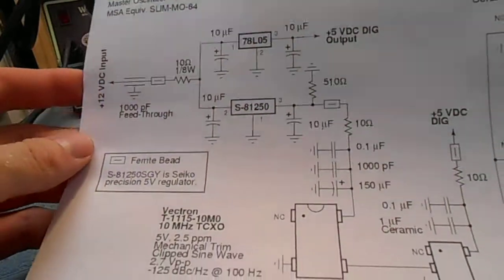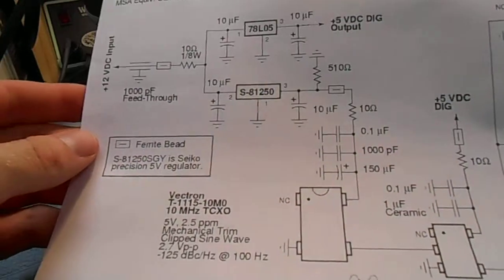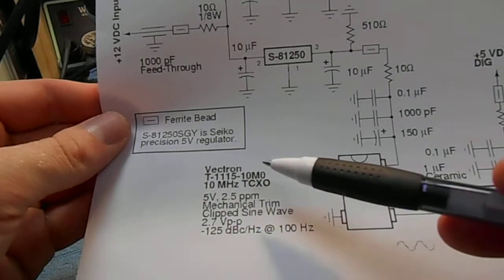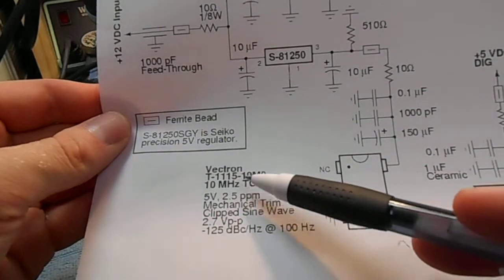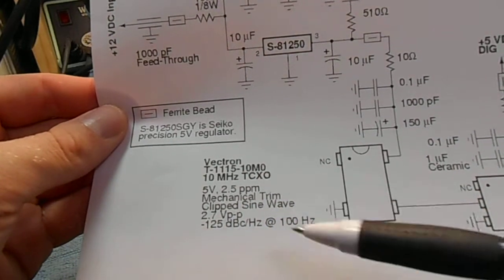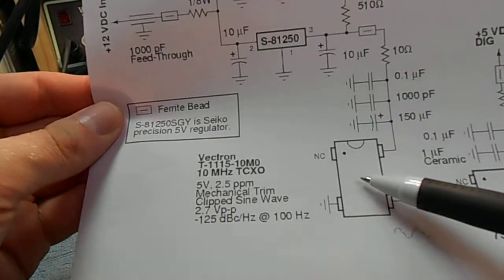The overall schematic is pretty much the same as the Scottie design, except of course for our oscillator here. It's a Vectron T-1115-10M0, 10 megahertz temperature compensated crystal oscillator. I found these on eBay, two of them for $6.